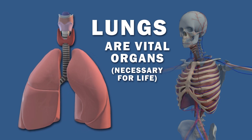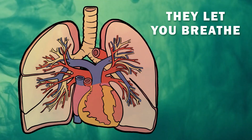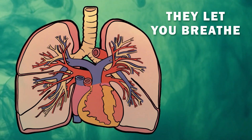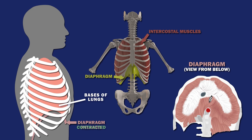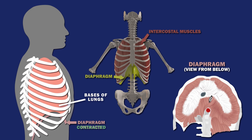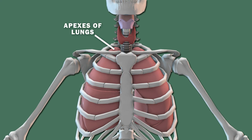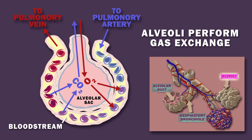The lungs are organs which let you breathe; they're near the backbone by the heart which sits beneath. The lungs' bases sit on top of the diaphragm, while the lungs' apexes extend into the thoracic root. Alveoli do gas exchange, wherein carbon dioxide in the bloodstream is replaced with oxygen.